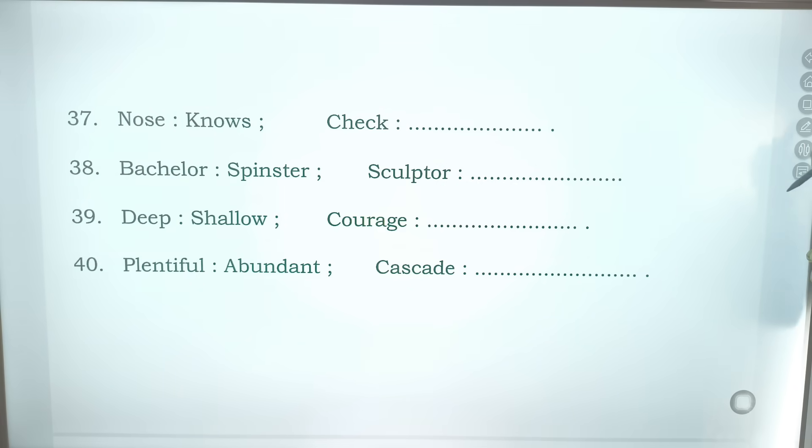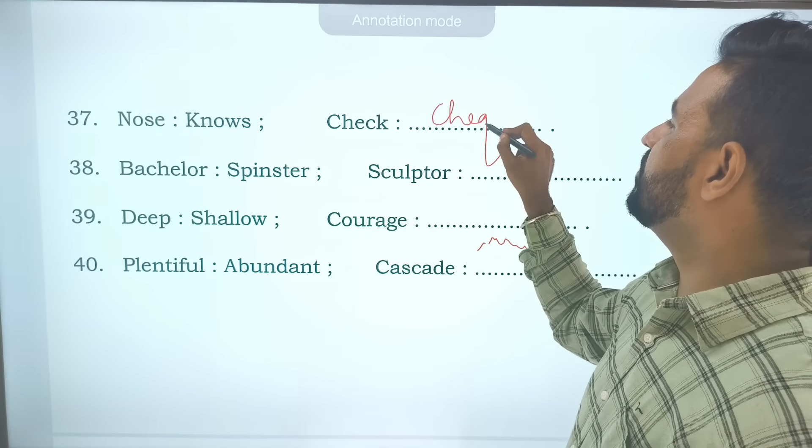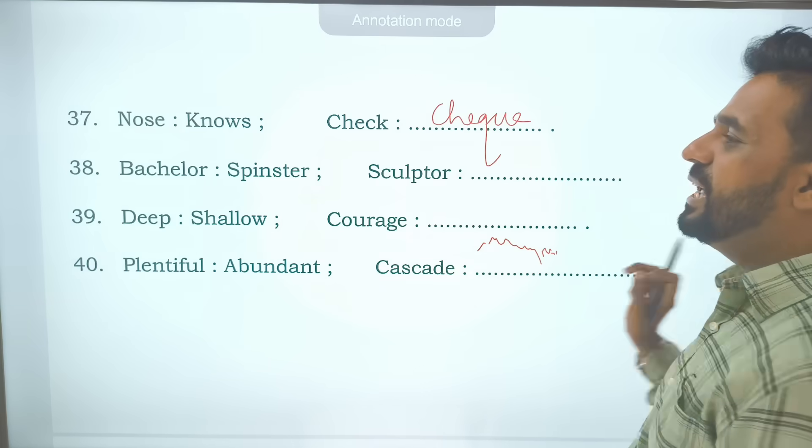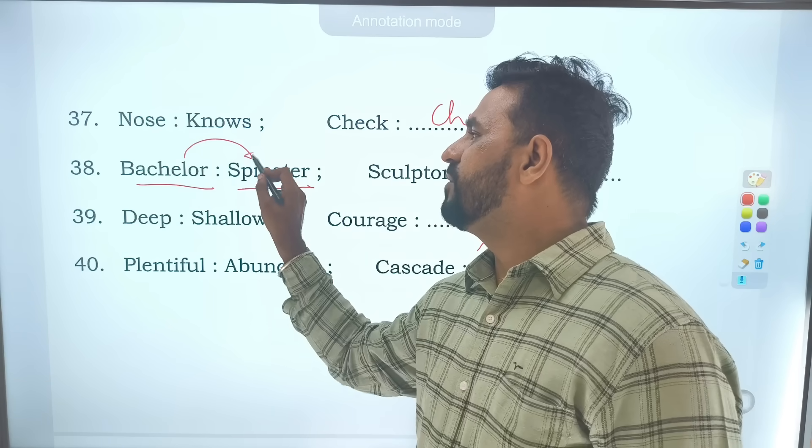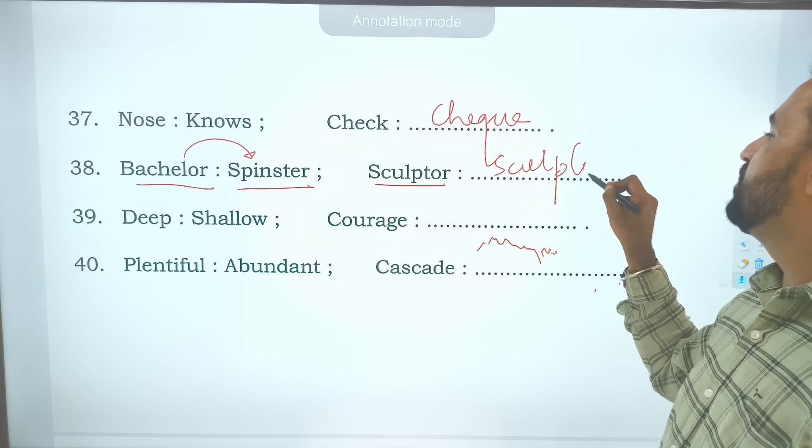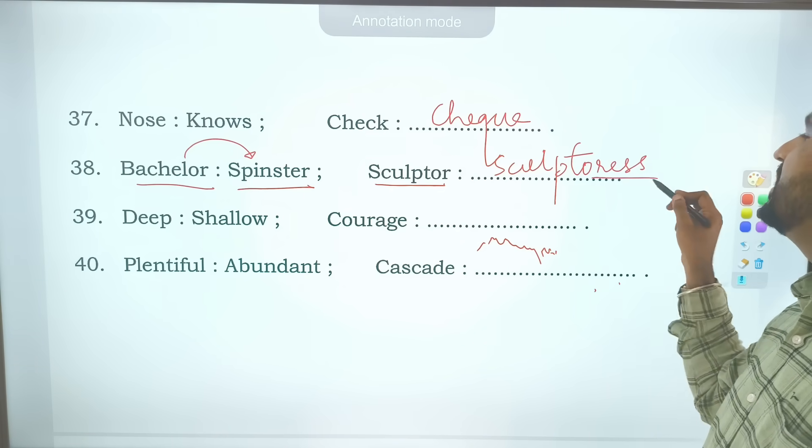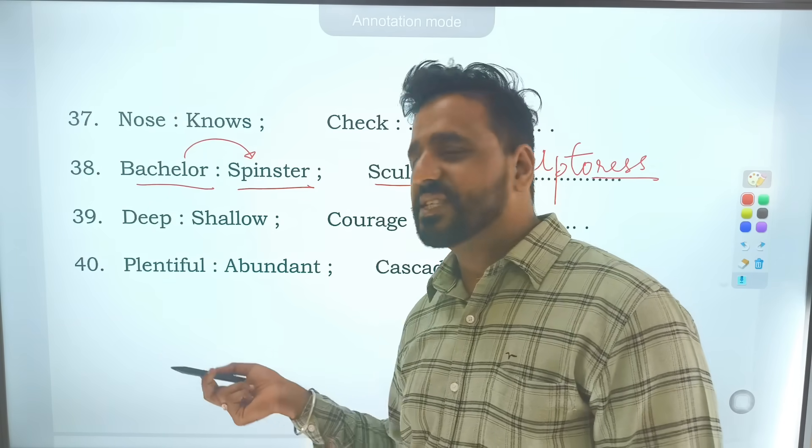Homophone has been given. Nose becomes knows. Chalk will become chalk. Then bachelor is male. The female bachelor we call it spinster. Sculptor is male. The female is sculptress. Only just add R-E-S-S here. You will get the answer.